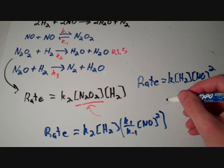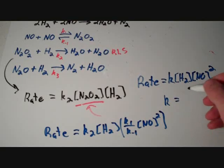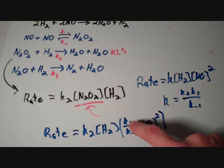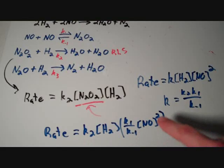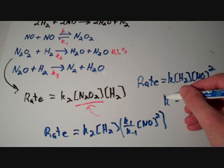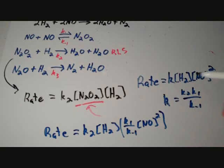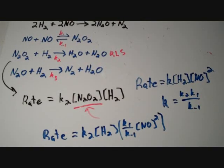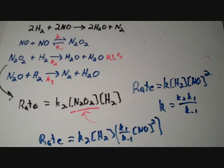Where K is equal to K2 times K1 over K minus 1. So, all I did was I just combined these terms together and rearranged it into one single constant, which I just call K. So, that is how to determine the rate law for a reaction that has a fast initial step in the mechanism.